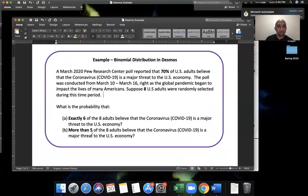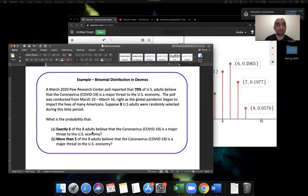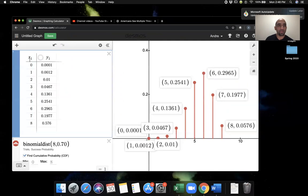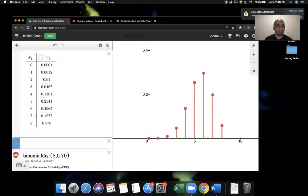And then part B says, okay, what's the probability that more than five of the eight adults believe that the coronavirus is a major threat? So the outcomes that correspond to more than five would be the outcome six, seven, eight. Those are the values of the binomial random variable that correspond to more than five. Let's add a note to write this in. So the probability that we have more than five successes, this is going to be the probability of six successes, plus the probability of seven successes, plus the probability of eight successes.